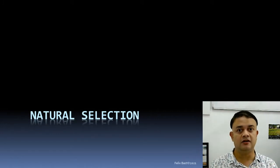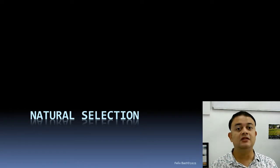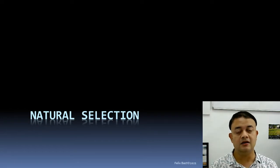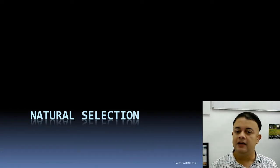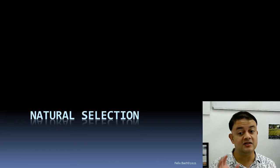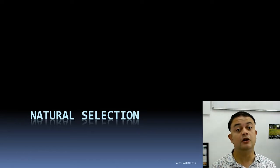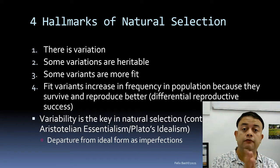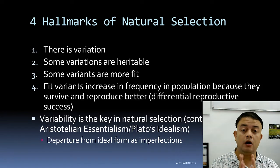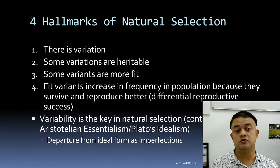Darwin thought it better to share credit with Wallace, and that is how this theory evolved. Natural selection is the central piece of the theory of evolution.